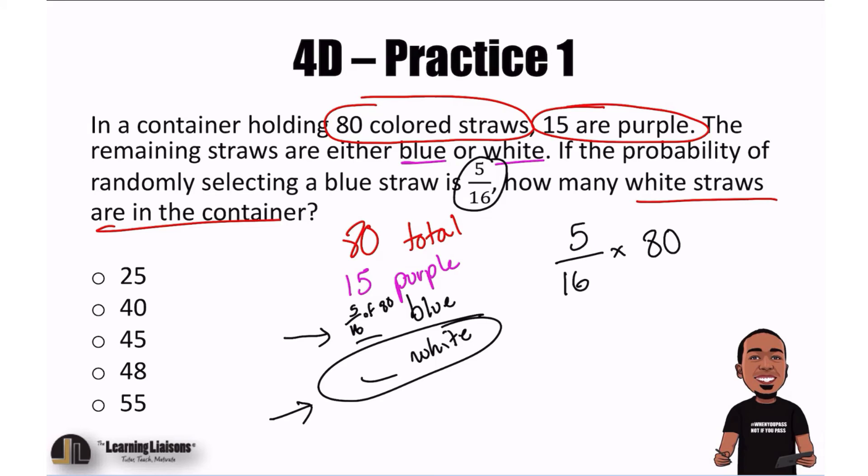So 80 divided by 16 - nope, that is 5. Great. So that becomes 5. And then 5 times 5 equals 25. So there we go. It looks like we have 25 blue straws.